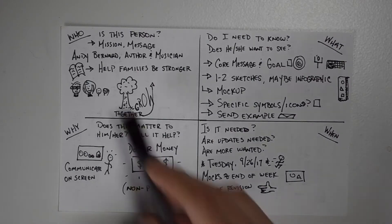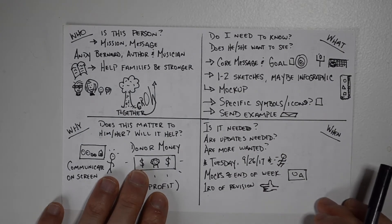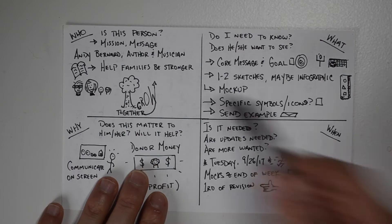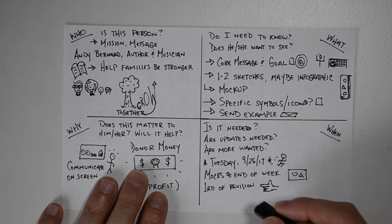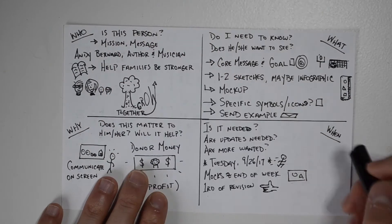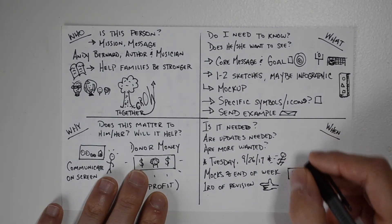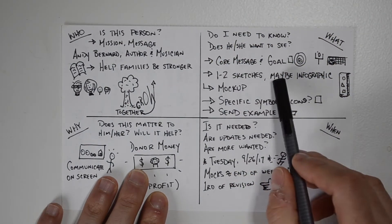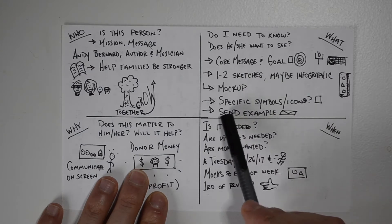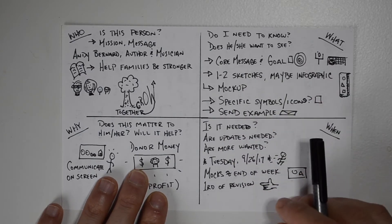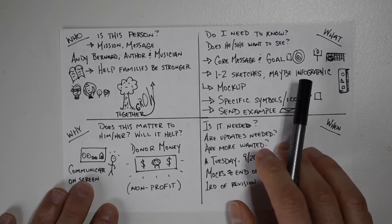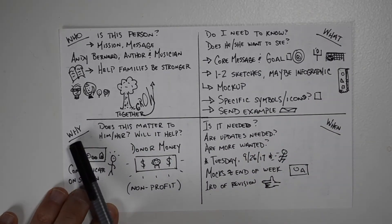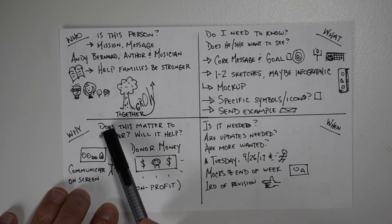I'll talk about that right after this, but these are the four questions — it's kind of a variation on the five whys, or just asking the five W questions. I'm trying to figure out who is this person, what's their message, what are they trying to communicate. So I make sure I know first who this is, and then we talk about what do they need — the core message, what do they want to see, like one to two sketches, maybe an infographic, send a couple of mock-ups, and are there any specific symbols or icons they want communicated in the sketchnote. Then we look at why, and it's funny that the client doesn't always know why it necessarily matters to them.